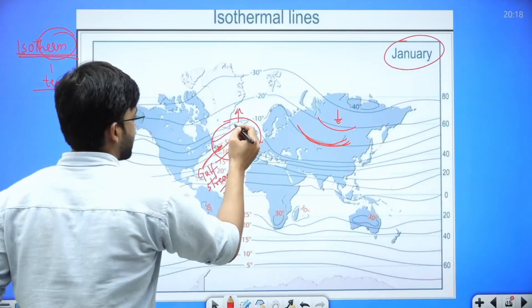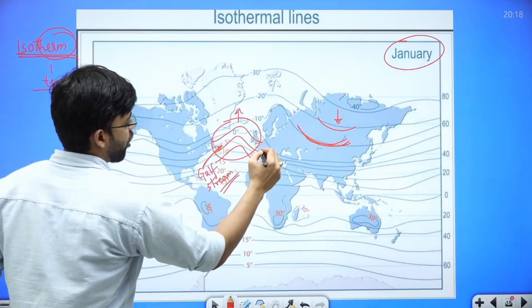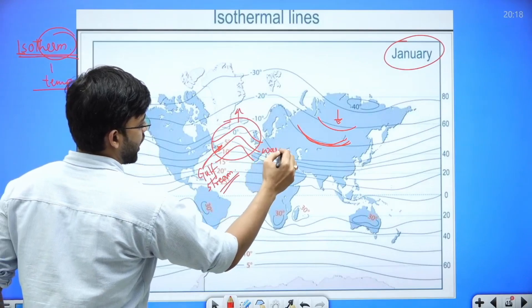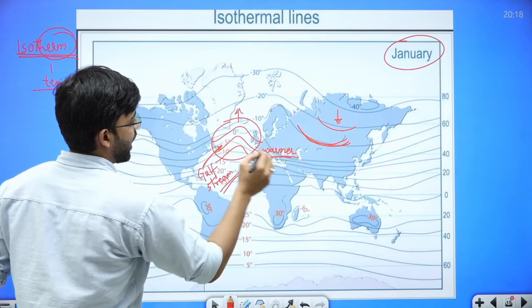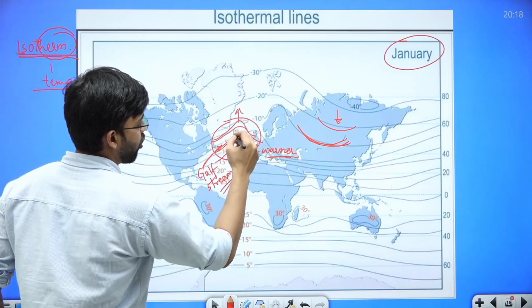So we can see that they are making ocean warmer, the Atlantic Ocean warmer, and hence the isotherm is shifting northward.